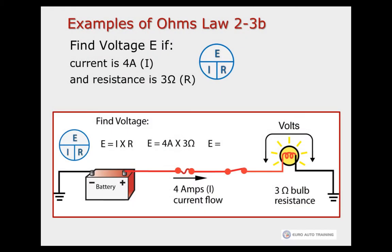In this example, let us find out what the voltage is. We have a resistance of 3 ohms from the bulb, and we have a measured current flow of 4 amps. So using the lower half of the formula, we multiply 4 amps times 3 ohms of resistance, and we will see that we have a total of 12 volts dropped across our bulb.